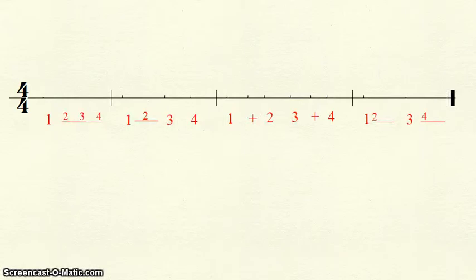We can work the other way as well, starting with the counts and filling in the notes. Here we see four measures of counting, and we will insert the notes. The first measure is a one with a line containing beats two, three, and four. This must be a whole note.